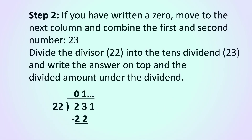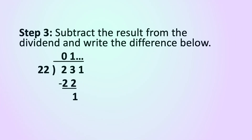Step 2. If you have written a 0, move to the next column and combine the first and second number. Divide the divisor into the tens dividend and write the answer on top and the divided amount under the dividend. Step 3. Subtract the result from the dividend and write the difference below. In this case 23 take away 22 equals 1.